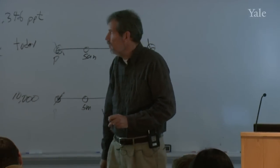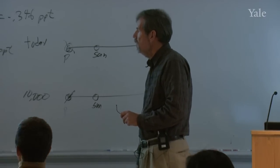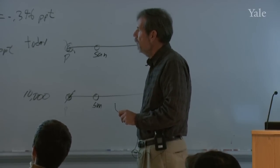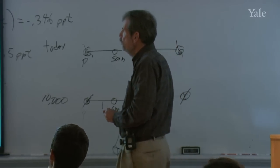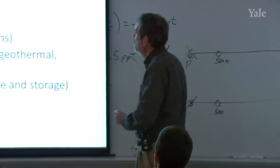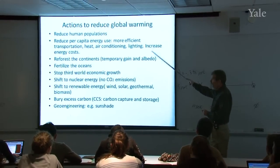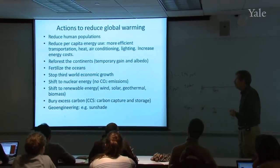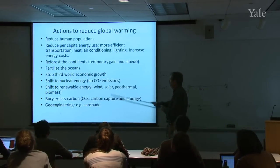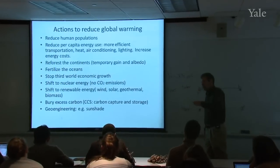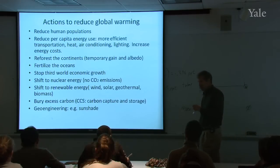If we wanted to reduce global warming, what would we do? None of these are easy. Many of these are impossible. But I'll list them anyway. Reduce human populations. Reduce per capita use of energy. One way to do that would be to increase energy costs so that each of us would work harder to reduce our per capita use of energy. Reforest the continents, because when you grow a tree, you sequester a certain amount of carbon dioxide. There are a couple of problems with that. A tree typically only lives 60 or 100 years. Then it will die. That carbon dioxide will be returned within 20 years.